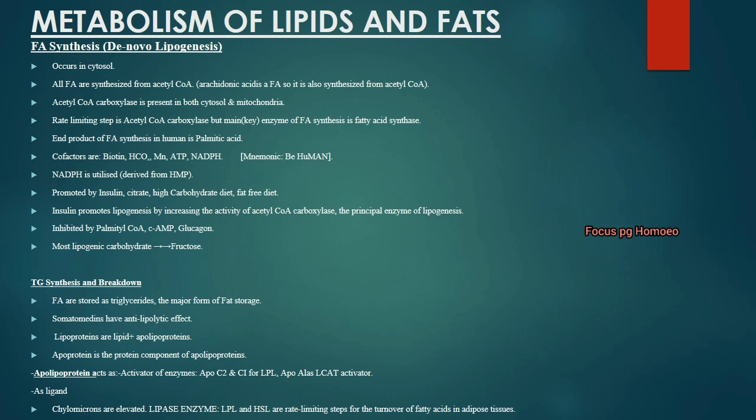Next is the metabolism of lipids and fats. Fatty acid synthesis, also known as de novo lipogenesis, occurs in the cytosol of the cell. It is synthesized from acetyl-CoA, which we learned about in the TCA cycle and glycolysis.